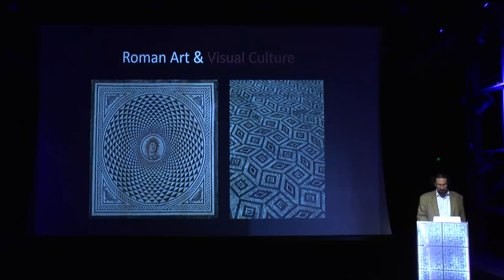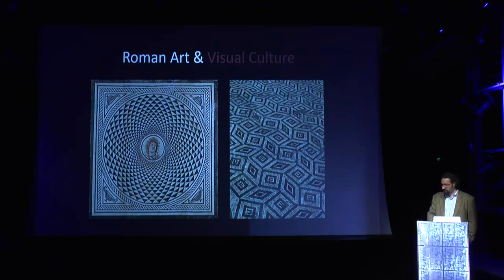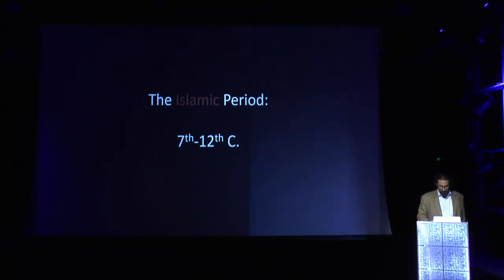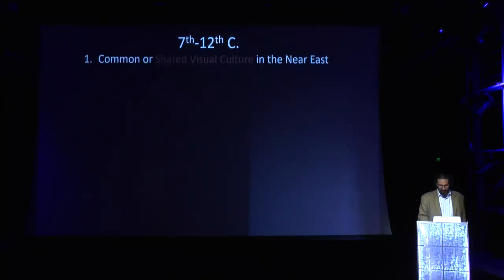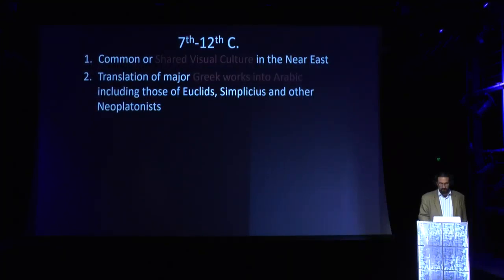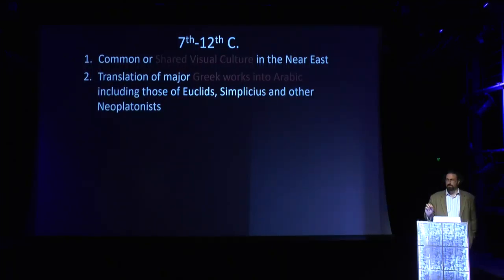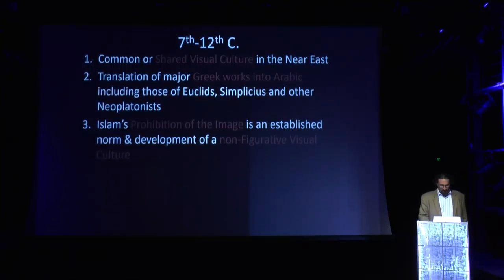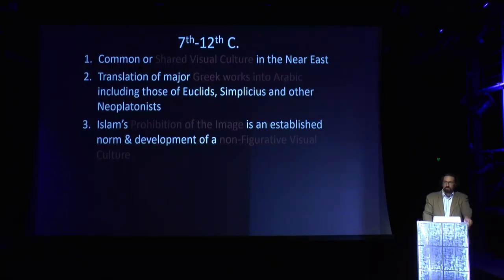From the 7th to 12th century, several interesting developments occur. First, Muslims inherit a shared visual culture in the Near East that is very Roman and Byzantine. Second, there is a translation of Greek works into Arabic, including those of Euclid, Simplicius, and other Neoplatonists. Third, the prohibition of the figurative image becomes an established norm at least in sacred architecture, and fourth, there is a development of the perception of geometry as a psychic space and theories of the imagination.